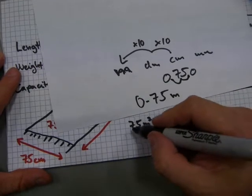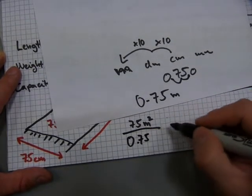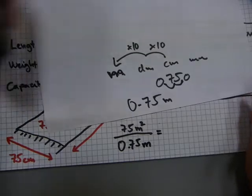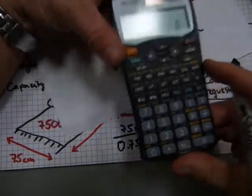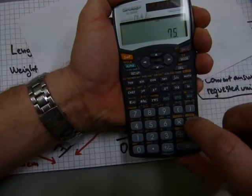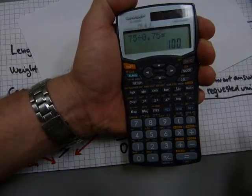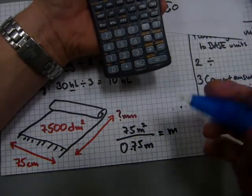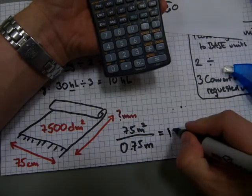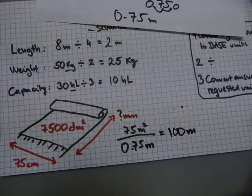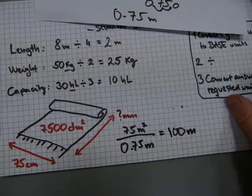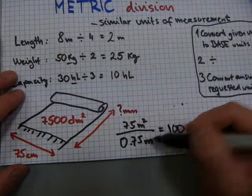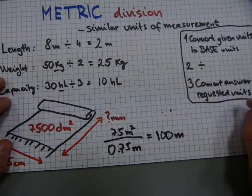So 75 square meters is going to be divided by 0.75 meters. Here's my calculator, just to be on the safe side. And 75 divided by 0.75 is going to equal 100 meters. That's the answer, but that's not the final answer. Because so far, we converted the given amounts to base units, to square meters and meters. We did the division. So far so good.